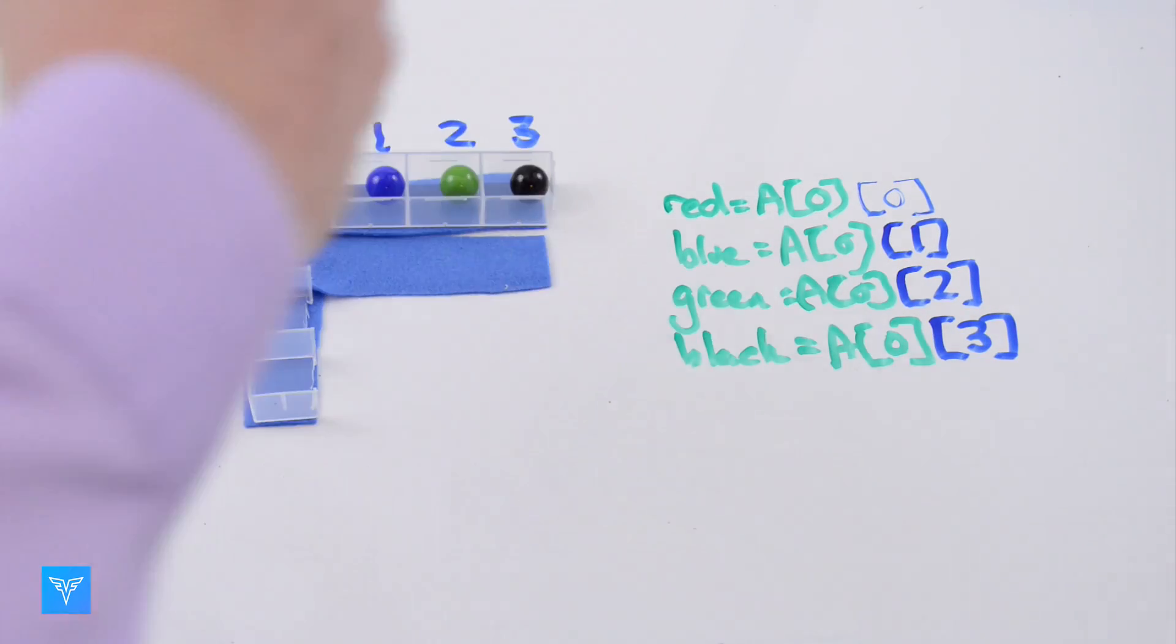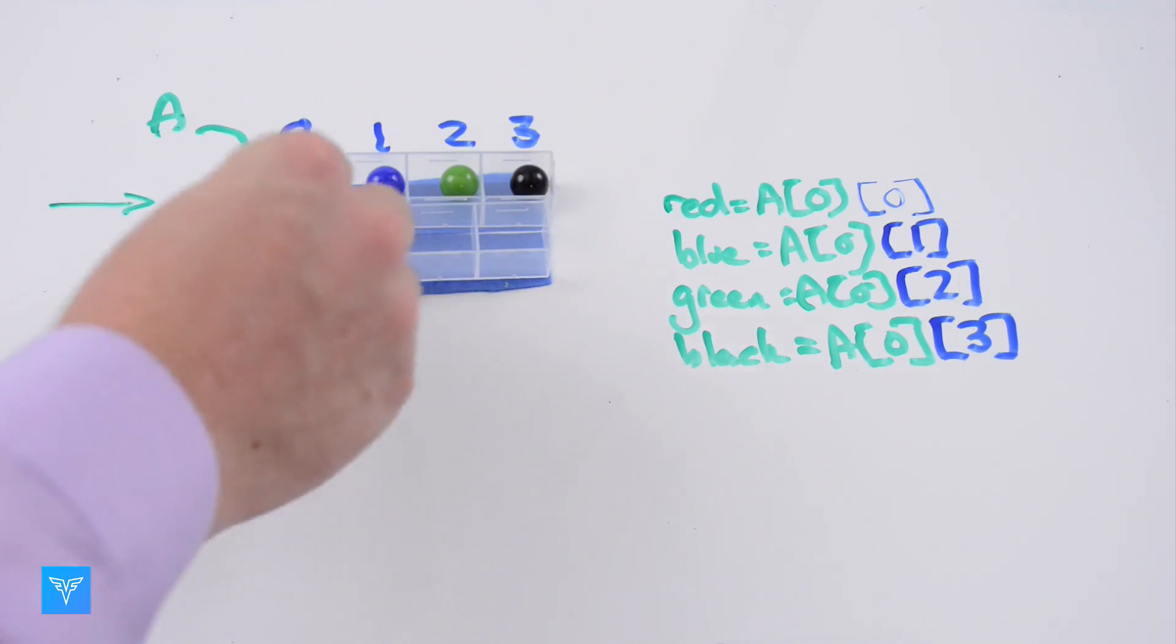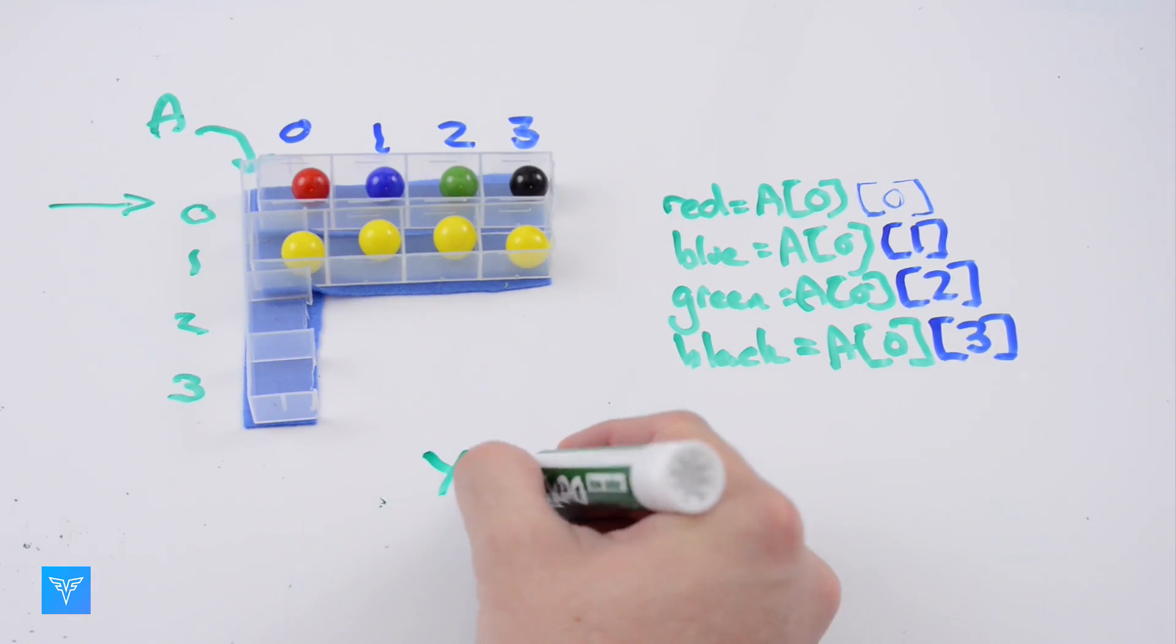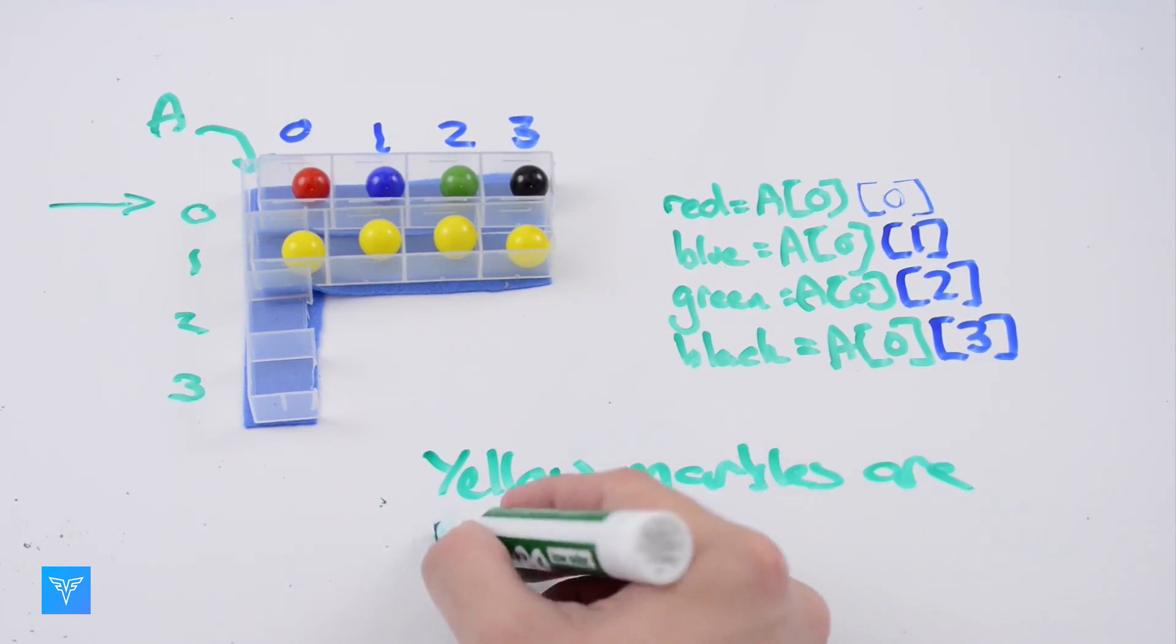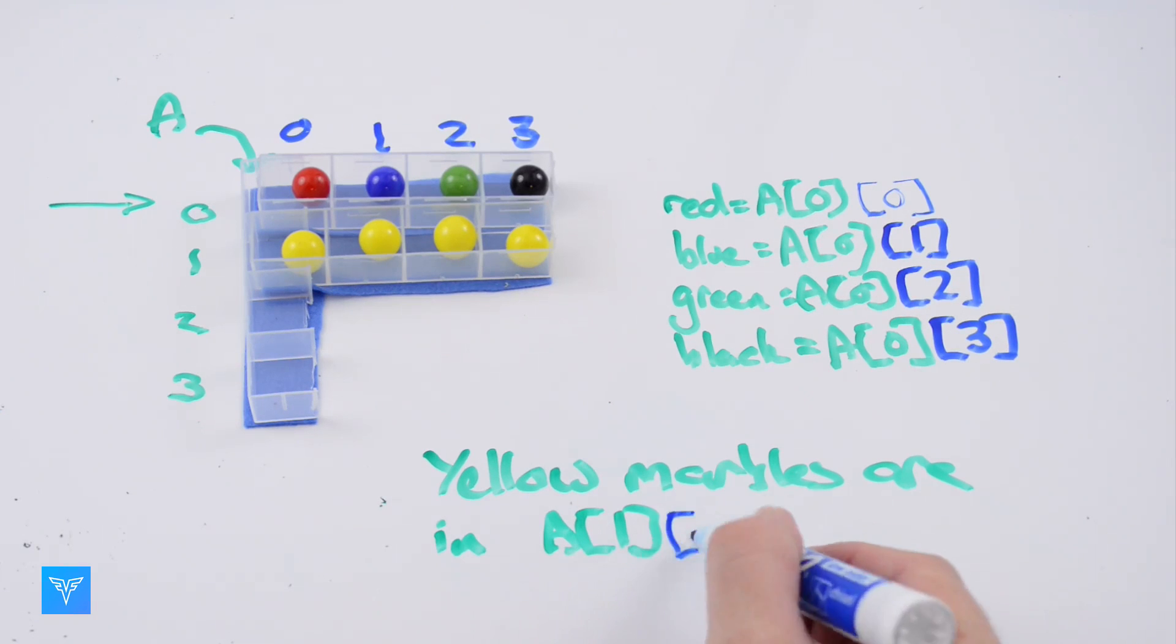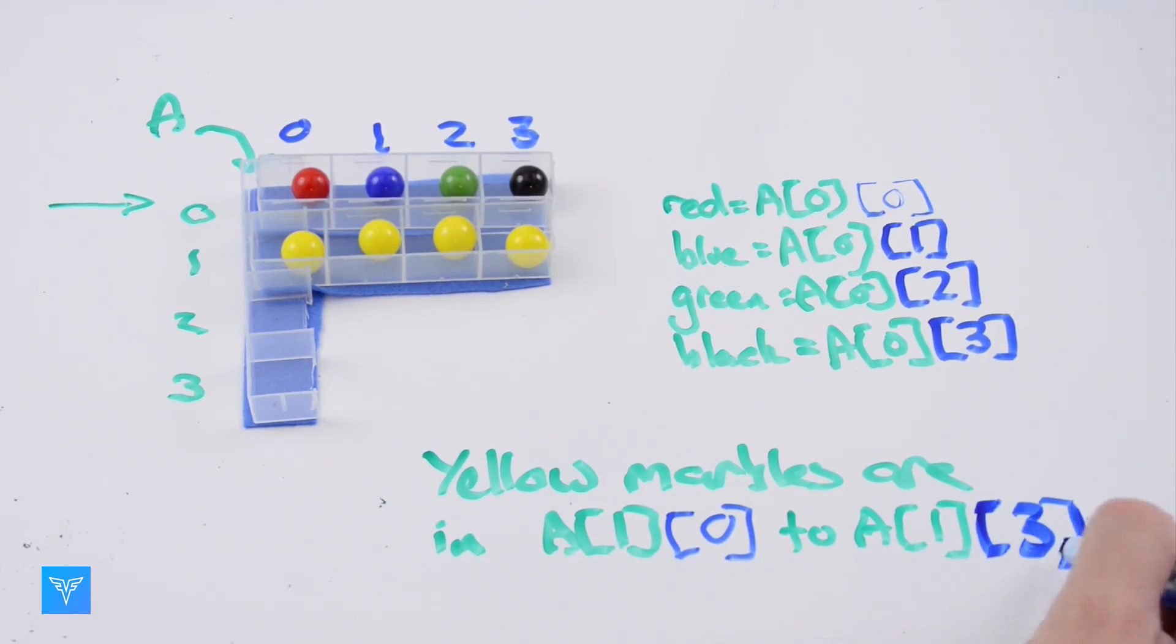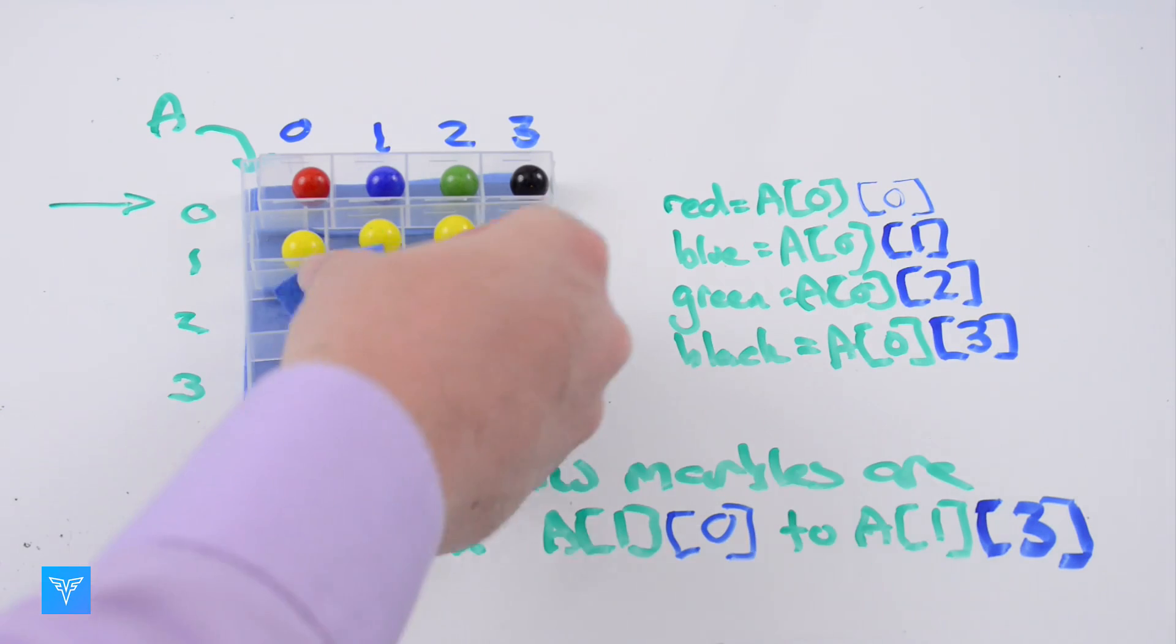We could build a second array. This time, all four entries are the same. The arrays don't have to be the same size.